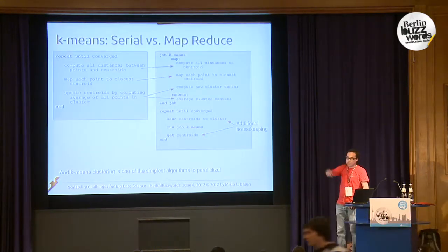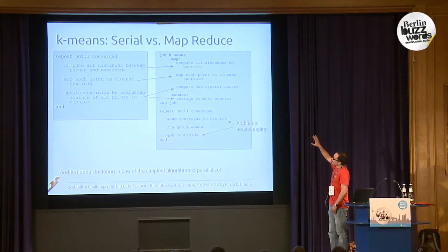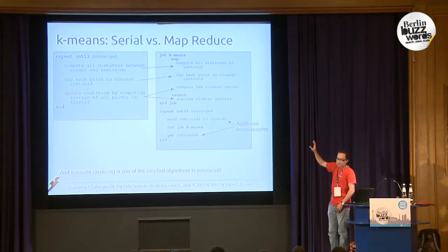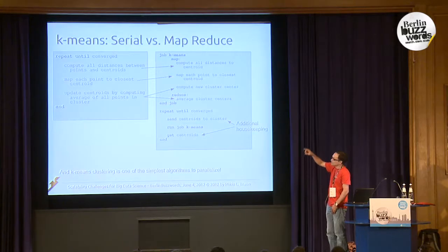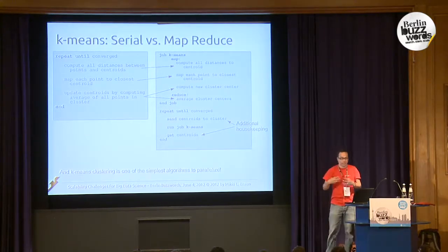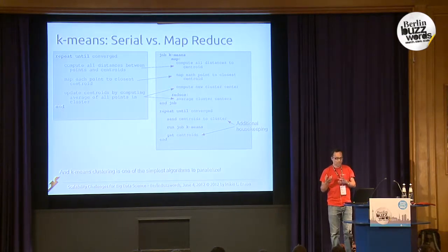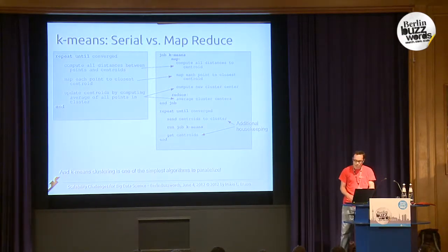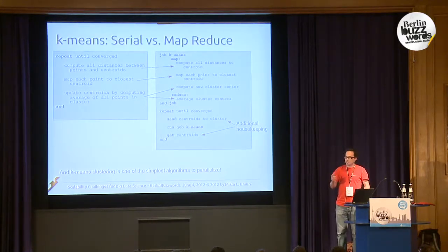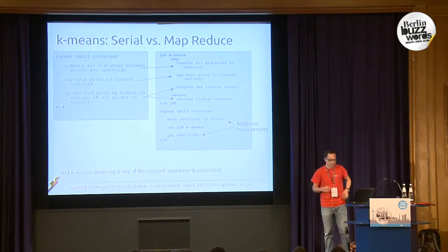It's really very simple, but already here: on the left you have an algorithm that's just a simple loop of two steps, and on the right you already have to define a job, take this one loop, define a map method, define a reduce method, and do additional housekeeping on the outside. The message is: for many machine learning algorithms you can formulate a MapReduce solution, but it already starts to feel a bit complex — the original idea of the algorithm is a bit different from what you have to do to parallelize it.